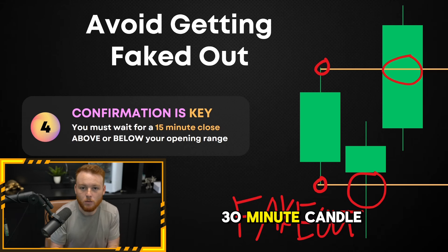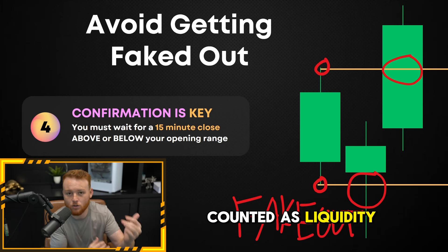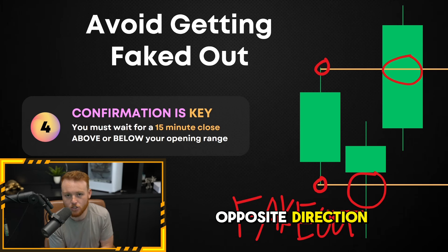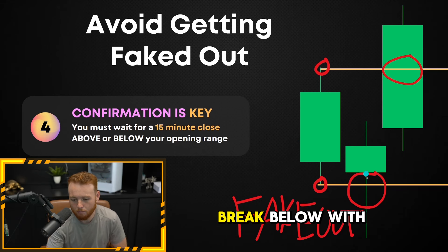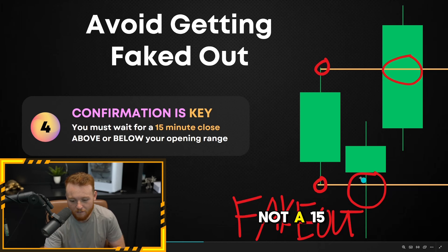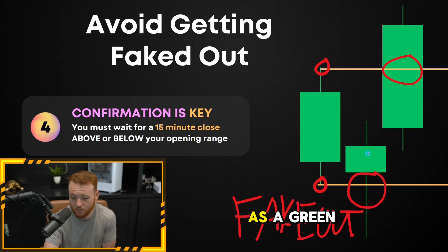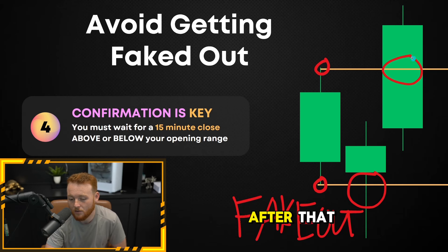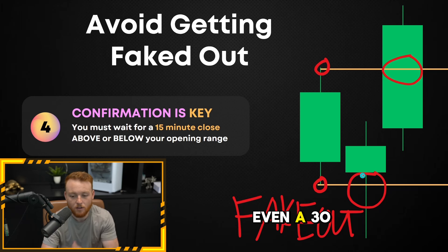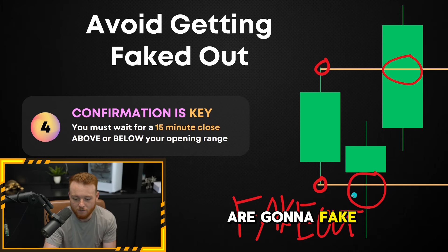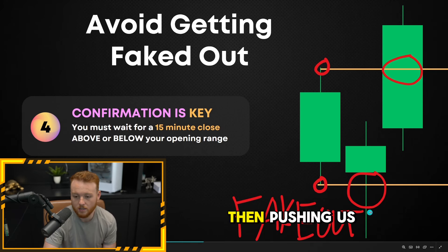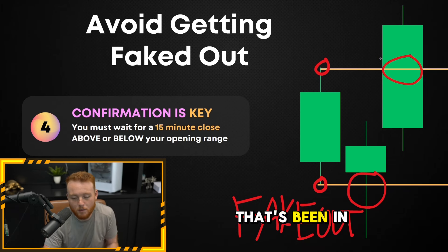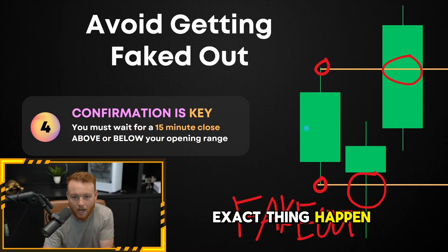When it comes to any strategy, confirmation is absolutely key. If you don't get that 15- or 30-minute candle close above or below a level, you're probably going to get counted as liquidity or just get faked out, and it's going to go in the opposite direction. Here's a prime example: candlestick one is your 15-minute opening candlestick. We see a break below with no confirmation — it was not a 15-minute candle close — and then we see more upside after that, breaking out to new highs. Market makers will fake you out by pushing below that previous low, liquidating all longs, and then pushing up to higher highs.